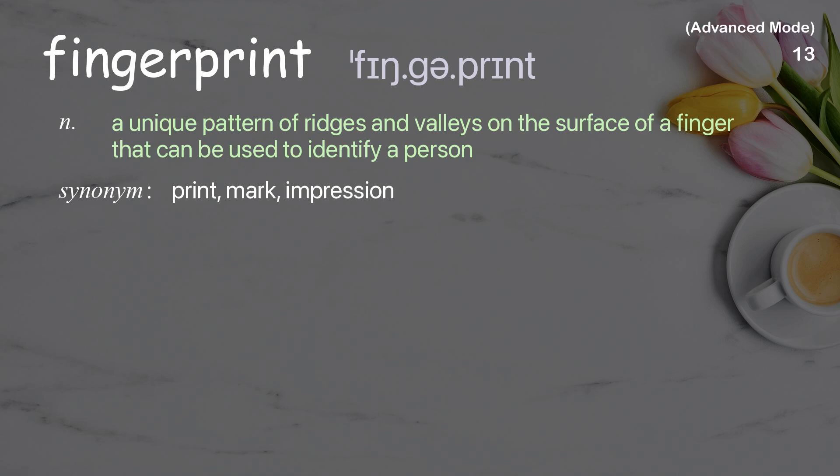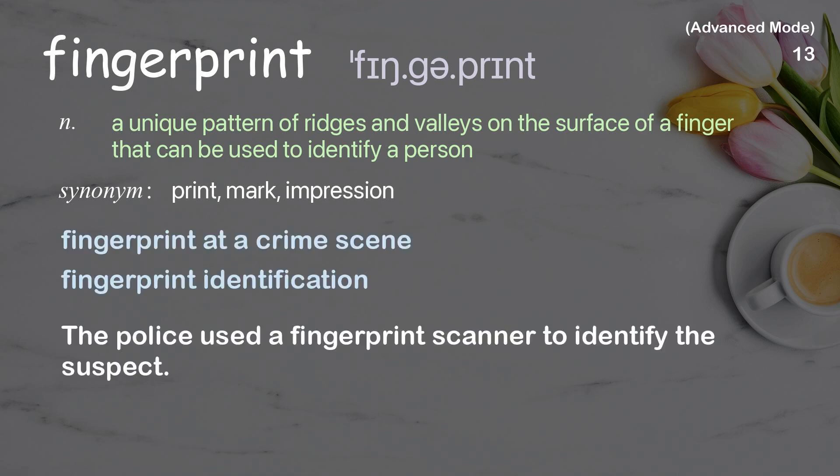Fingerprint: A unique pattern of ridges and valleys on the surface of a finger that can be used to identify a person. Examples: Fingerprint at a crime scene. Fingerprint identification. The police used a fingerprint scanner to identify the suspect.